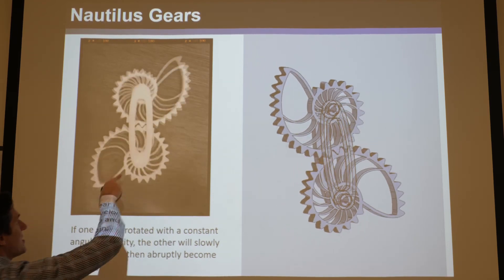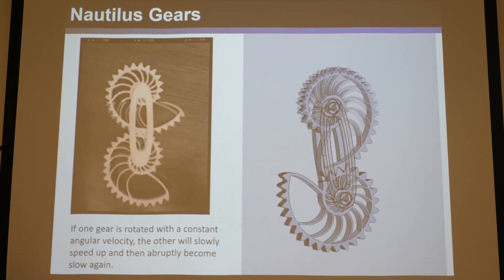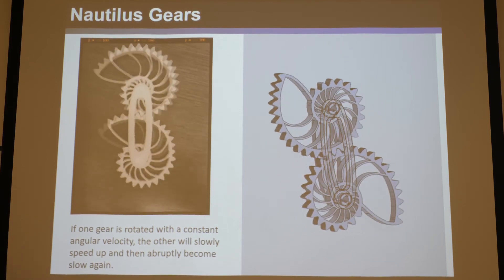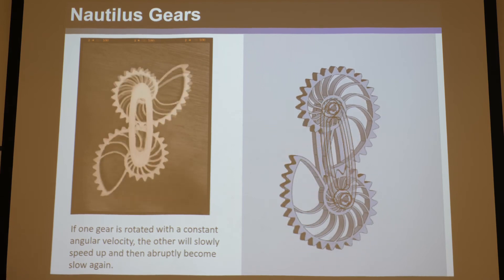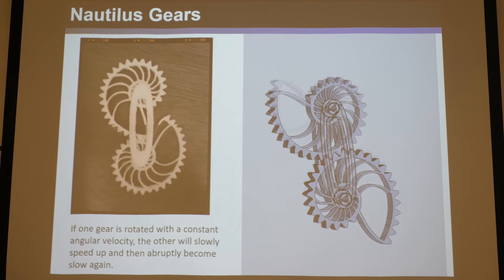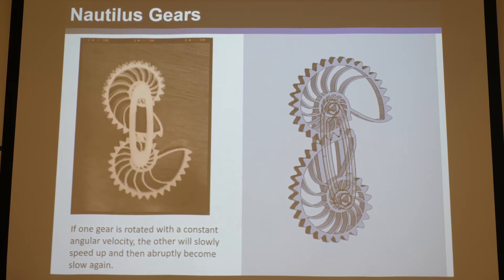Like boop, it warps down - so it goes up slowly and then warps down. You can imagine if one gear is rotated with a constant angular velocity, the other will slowly speed up and then abruptly become slow again. If you want that, then that's what you'd want to use - nautilus gears.